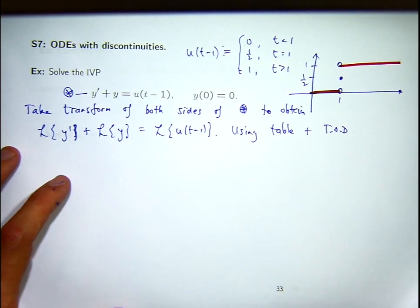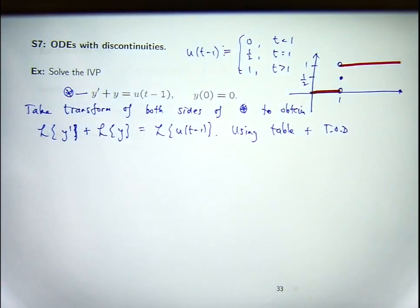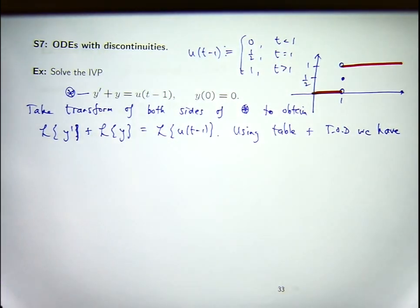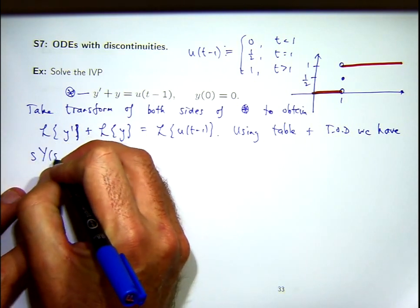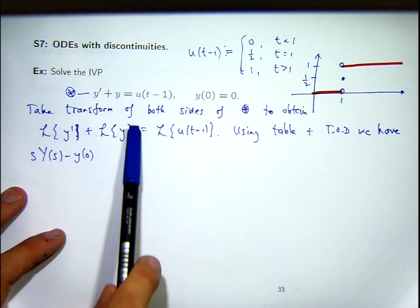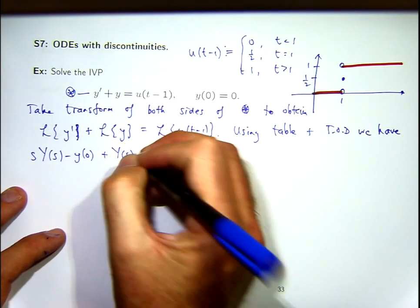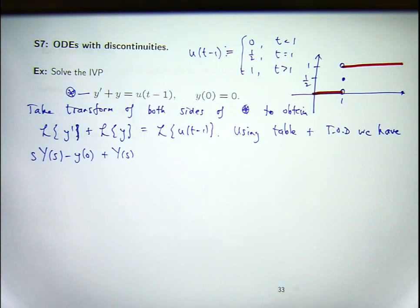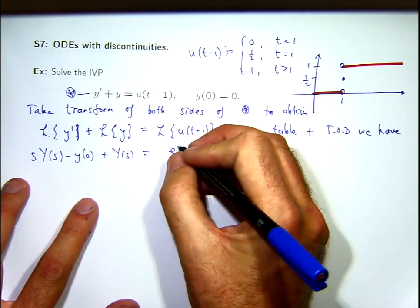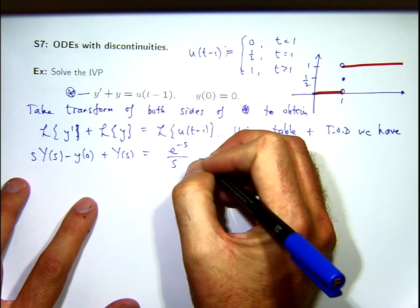So by TOD, I mean transform of derivatives, or you could just say I'm using a table here. So the transform of this will be the following. So that's the transform of the derivative, y dash. This is the following. So what I'm doing now, I'm writing the transform of little y as big Y of s to emphasize that it's a function of s. And on the right-hand side, I'll get the following.